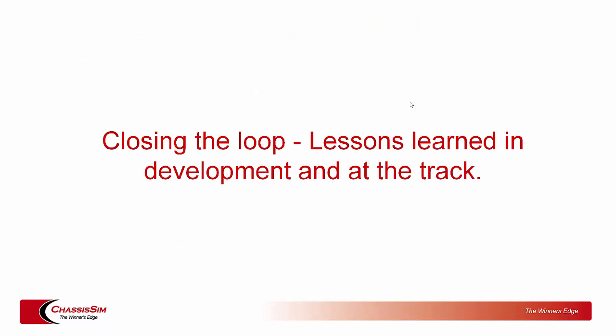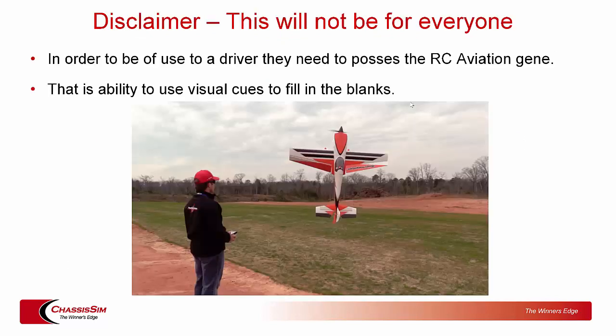Closing the loop — lessons learned in development and at the track. First, a couple of disclaimers. This is not going to be for everyone. Disclaimer number one: in order to be of use, the driver needs to possess what I call the RC aviation gene — the ability to use visual cues to fill in the blanks about what the vehicle is actually doing. What has been noted for decades in RC aviation circles is that if you've got a good RC aviation pilot with the physical constitution to fly, they'll convert to a full-sized aircraft very quickly, in a matter of hours.